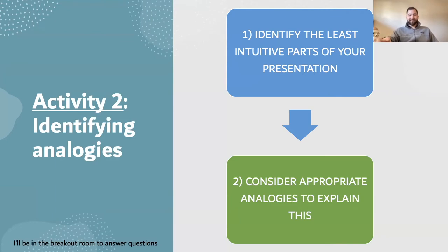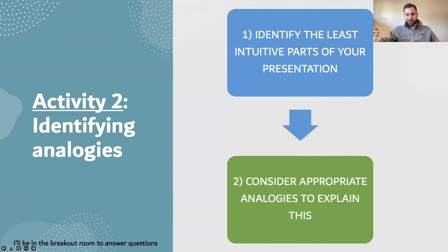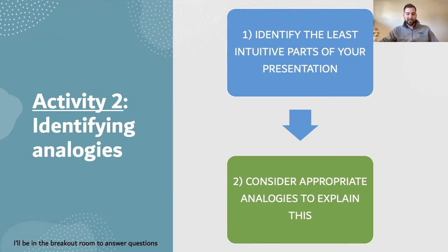Activity Two: identify an analogy. Spend a few minutes identifying the least intuitive parts of your presentation — your research, your topic. Elizabeth, for example, identified that nobody knows what T cells are or why we're using them. That is critical: first recognize that people will not understand this part of my presentation — that's perfectly okay — and then consider some appropriate analogy, exactly what we just did.